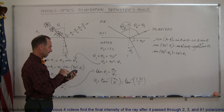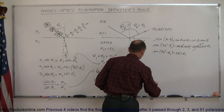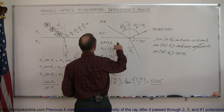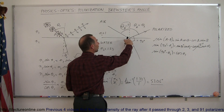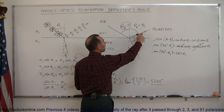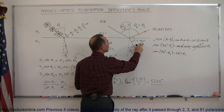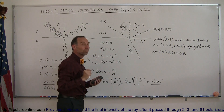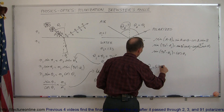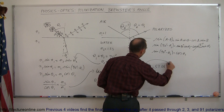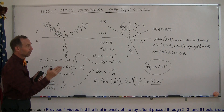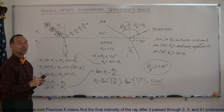Taking the arctangent of 1.33 gives us 53.06 degrees. That's the angle required for theta sub 1 to produce reflected light that is polarized, because at that angle the reflected and refracted rays are 90 degrees apart — and that is known as Brewster's angle. So Brewster's angle is equal to 53.06 degrees. When you shine light at that angle relative to the normal on a smooth water surface, the reflected light will be polarized.